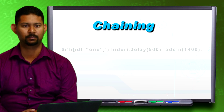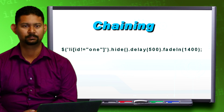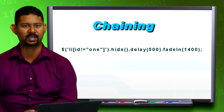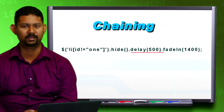Look at the following line of code. This single statement has three methods acting on its elements: hide, delay, and fade in.